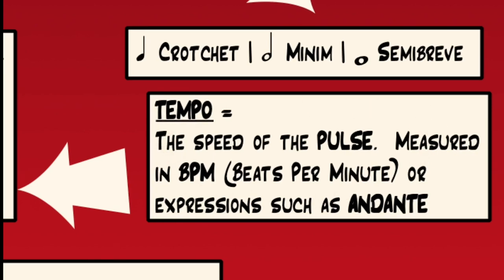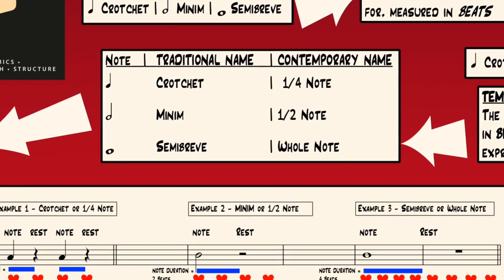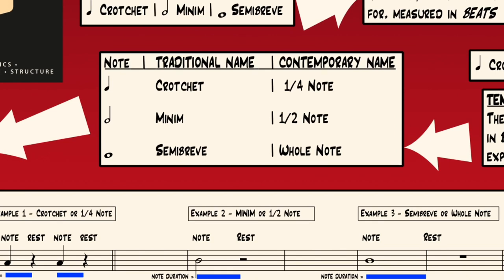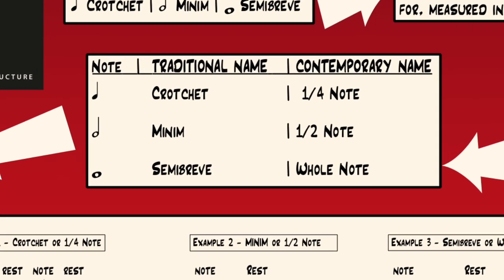In another video we'll discuss the topic of time signatures — that develops this idea further, but it's unnecessary to understand those at this point. In all of the Mechanics of Music videos we'll make use of both the traditional and contemporary naming conventions for note durations. Both are commonly used and pretty much understood by all musicians. Let's hear a few examples.